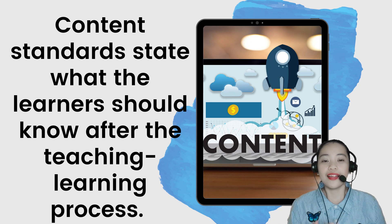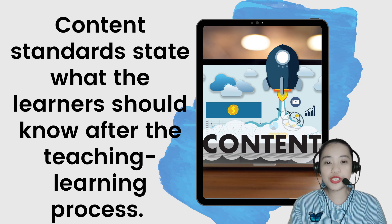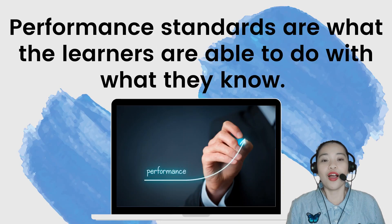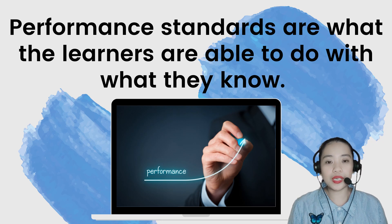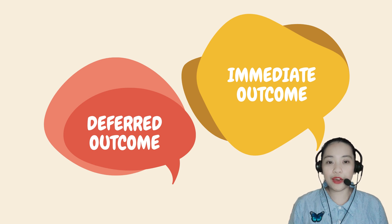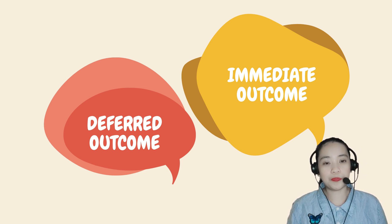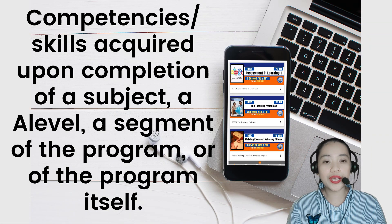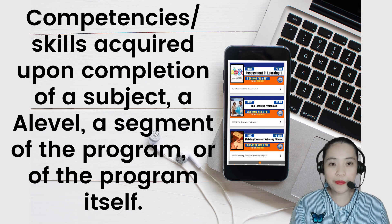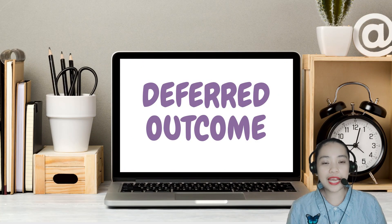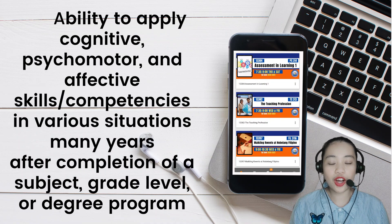We have content standards that state what the learner should know after the teaching-learning process. And performance standards are what the learners are able to do with what they know. We also have two outcomes: the immediate outcome and the deferred outcome. Immediate outcome means competencies or skills acquired upon completion of a subject, a level, a segment of the program, or of the program itself.